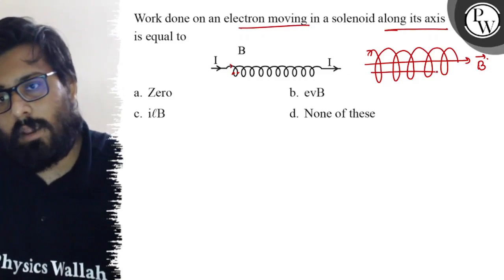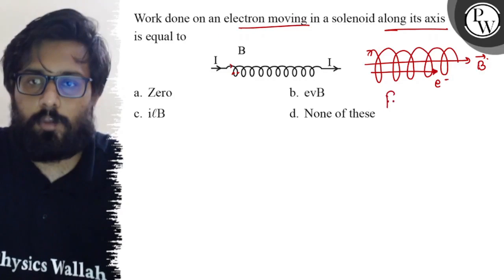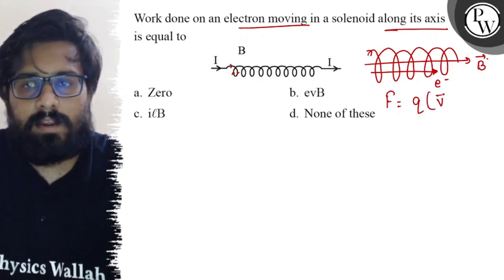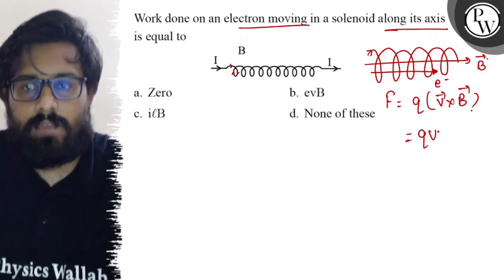The force on the electron can be written as F = q(v vector cross B vector), okay? So it's written as F = qvB sin θ.